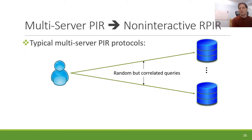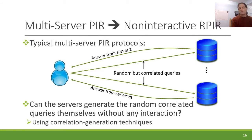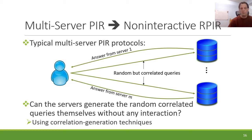For the transformation: look at a typical multi-server PIR protocol with two rounds of communication. The client sends individually random but correlated queries to the servers; each server answers its own query; and the client reconstructs the desired bit. The question is whether servers can generate these random correlated queries themselves without any interaction with the client. There is a lot of recent work on pseudorandom correlated randomness generation, and indeed there is one example where we know this works.